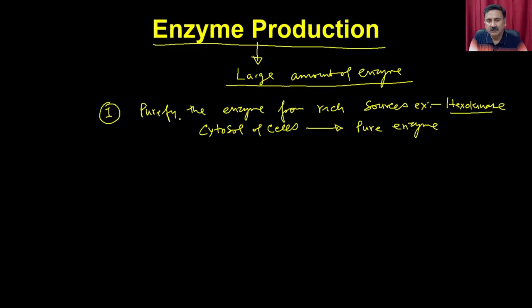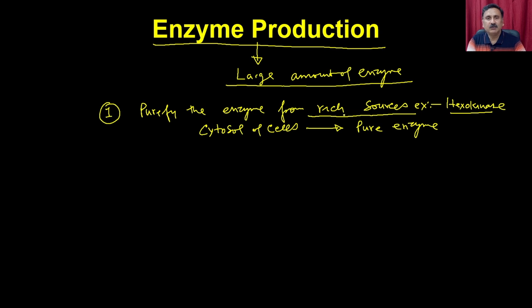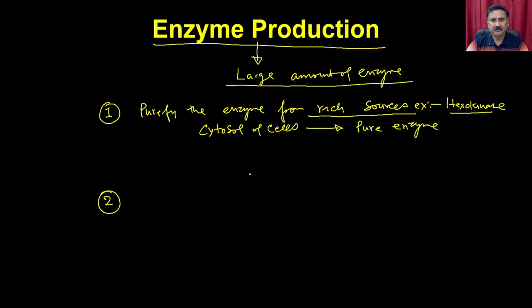In this approach, you first have to identify a rich source. For example, if you want to purify lysozyme, it is very heavily available in many biological fluids. You identify those biological fluids and then use different chromatography techniques to get the pure enzyme.